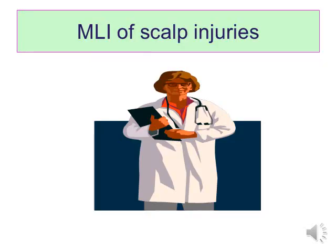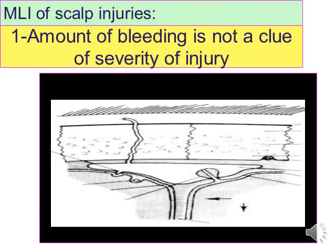The first medico-legal importance of scalp injuries is that the amount of bleeding is not a clue of severity. The scalp has a heavy blood supply, and fibrous septa in the subcutaneous layer keep vessels open after injury. This means minimal trauma leads to severe bleeding.